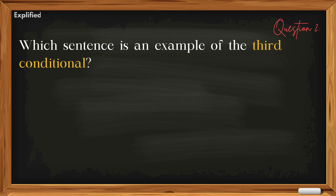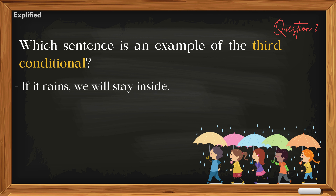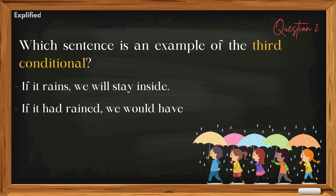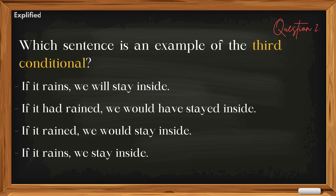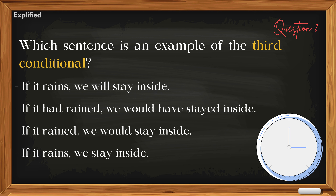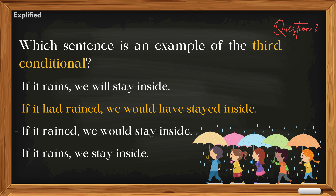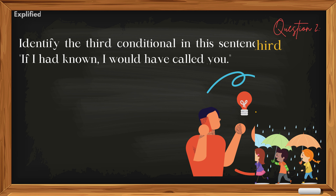Question 2: Which sentence is an example of the third conditional? 'If it rains, we will stay inside.' 'If it had rained, we would have stayed inside.' 'If it rained, we would stay inside.' 'If it rains, we stay inside.' Answer: 'If it had rained, we would have stayed inside.'